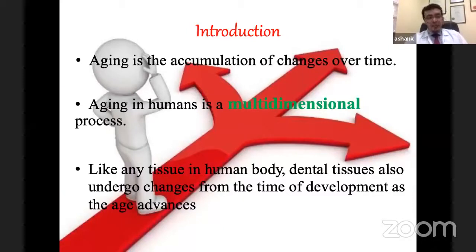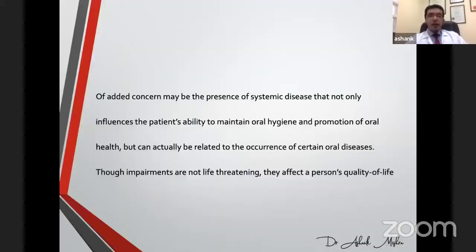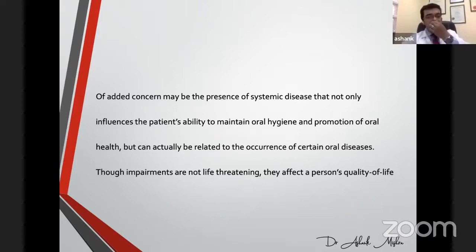Aging is an accumulation of changes which happen over time, and in humans it is a multi-dimensional problem. Like any tissue in the human body, dental tissues — dental enamel, dentine, gums — also undergo changes over time as aging progresses. An important added concern is that as age progresses, systemic diseases, meaning other medical conditions, add up to existing dental conditions.